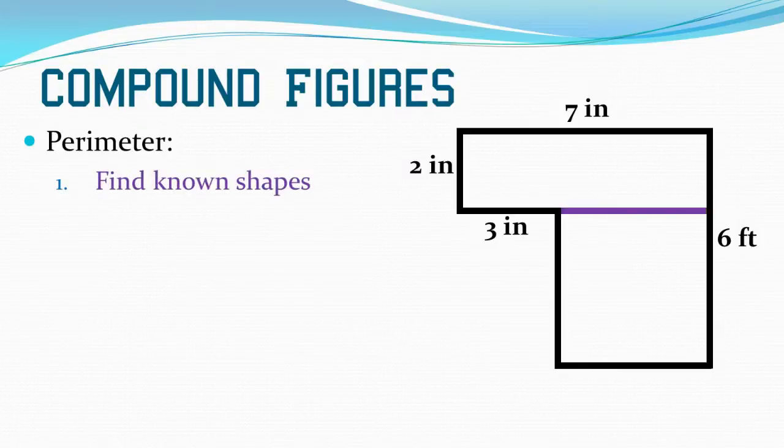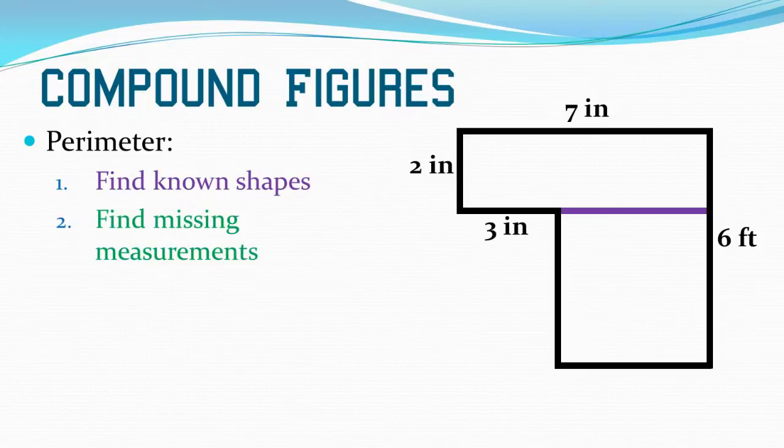So I start by finding all of the known shapes. I see here two rectangles. So if I extend that line, I make two very clear rectangles. Now I need to find missing measurements. I can do this by using the properties of the sides that I know, or I can use line segment rules.